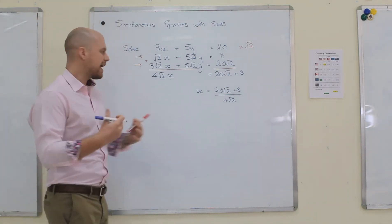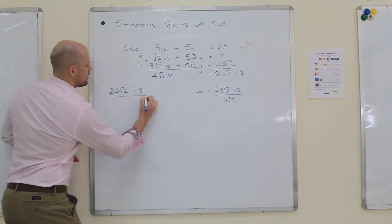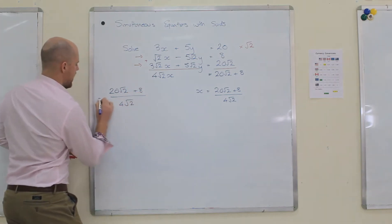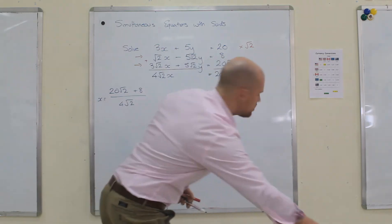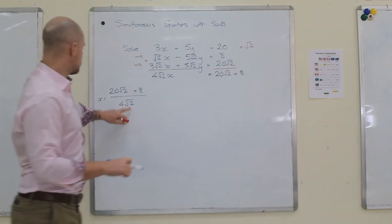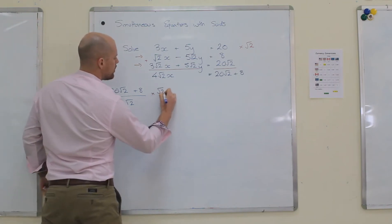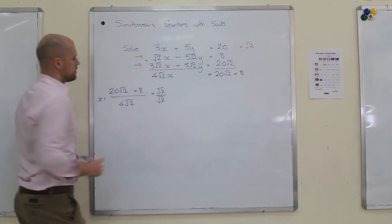If you've forgotten how to do that, look back at the last video. Now, this is my x and what I'm going to do is I'm going to multiply by root 2. I'm going to get rid of the root 2 on the bottom. So I'm going to times top and bottom by root 2.